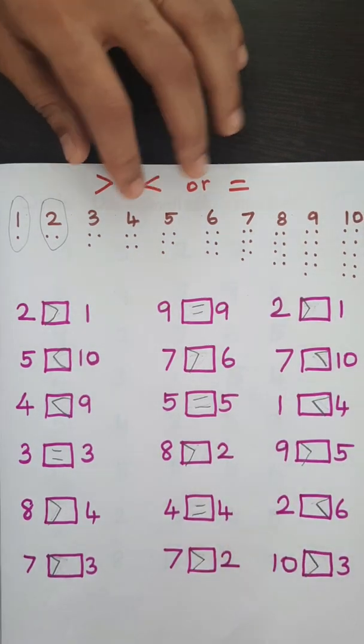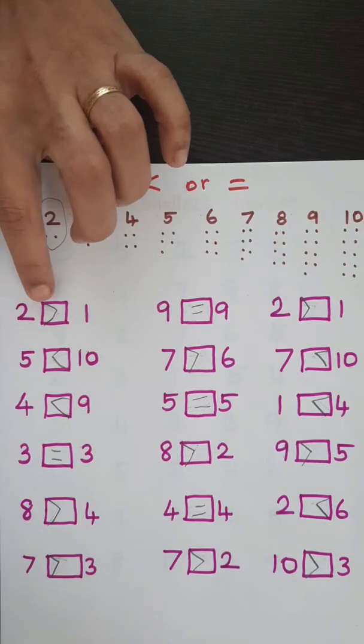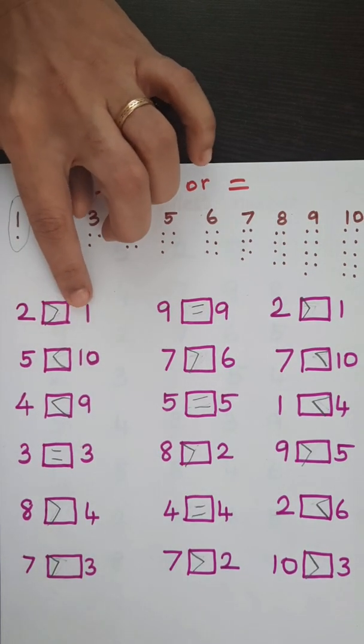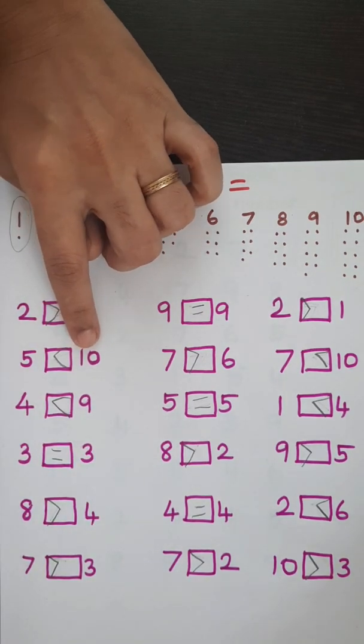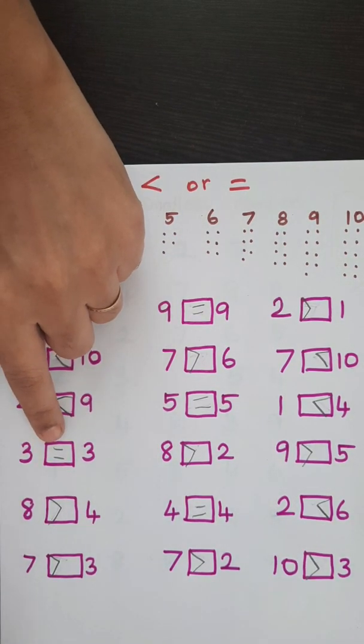So, how do we say this? We say 2 is greater than 1 and 5 is less than 10. And we say 3 is equal to.